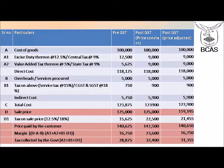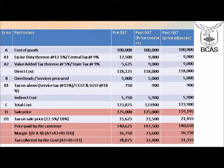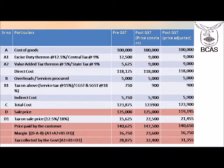Now, if the supplier were selling these goods at 1,25,000 rupees on a net-to-net basis, after deducting the input tax credit available to the supplier, the margin available would be approximately 16,750. The tax collected by the government — central as well as state — would be approximately 28,875, whereas the price paid by the ultimate consumer would be 1,46,625.